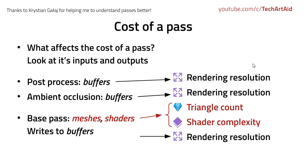The Base Pass, which is responsible for reading information from the shaders and textures and writing it to the g-buffer, is obviously dependent on the complexity of meshes and shaders. But it also writes to the buffer, so the heavier the resolution of your screen, the longer the Base Pass will take to render. It may seem complicated, but it will be clearer when I go through the particular passes.